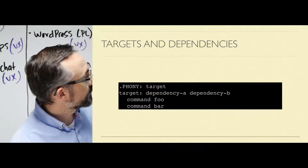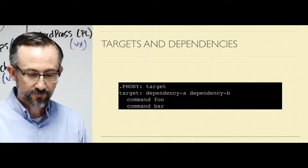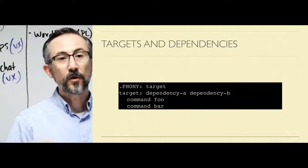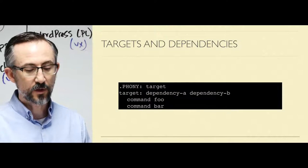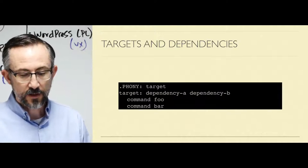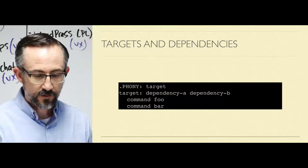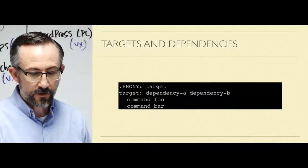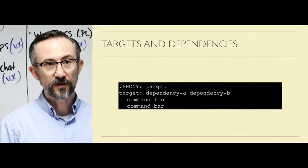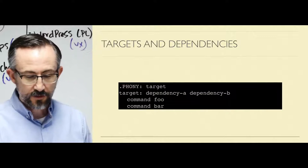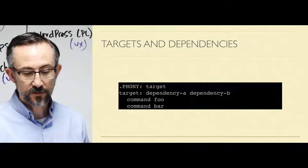Dependencies — sometimes they're called prerequisites. They will still only run, even for phony or real targets, if they are out of date. If your dependency is a phony target as well, then it will always run. It will never be checked for being out of date. Dependencies, like targets, may be files or directories. You can think of a dependency as a target that another target depends on.